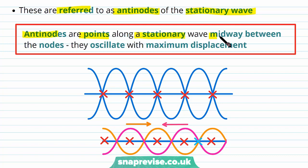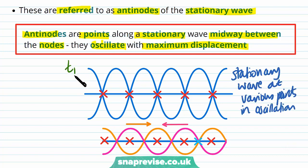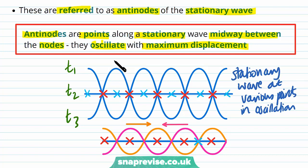Antinodes are points along a stationary wave midway between the nodes; they oscillate with maximum displacement. Looking at our stationary wave at times t1, t2, and t3, we've already marked on our nodes. Now we mark on our antinodes — which are midway between the nodes — at this point, this point, this point, this point, and these other points. At our antinodes we have maximum displacement and maximum amplitude.